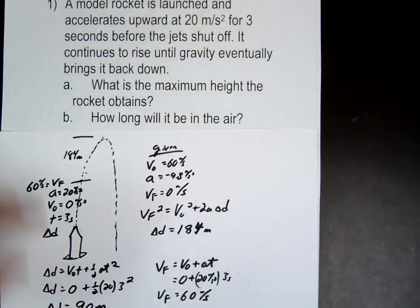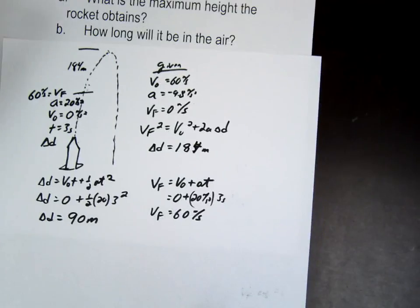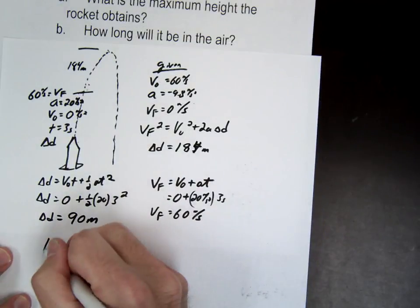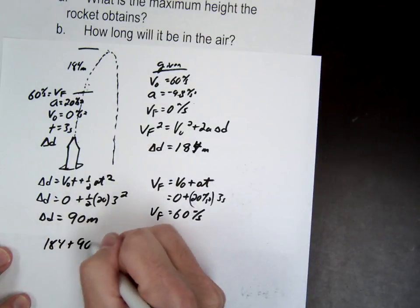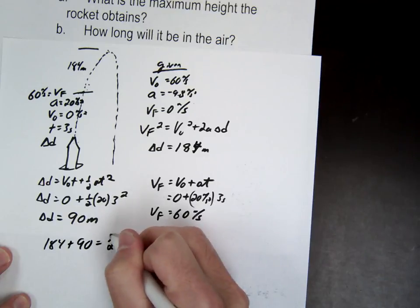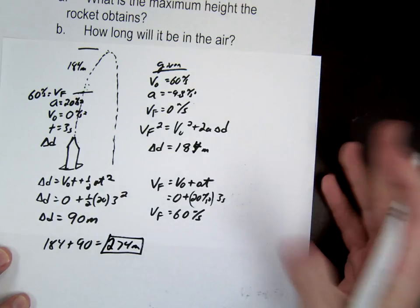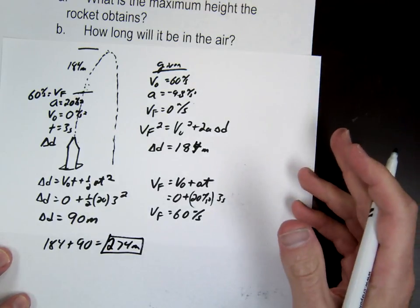So the question is asking the max total height. What do we do with those two? Add them up. So we're going to have 184 plus 90, 174, 274. Max height. Good?